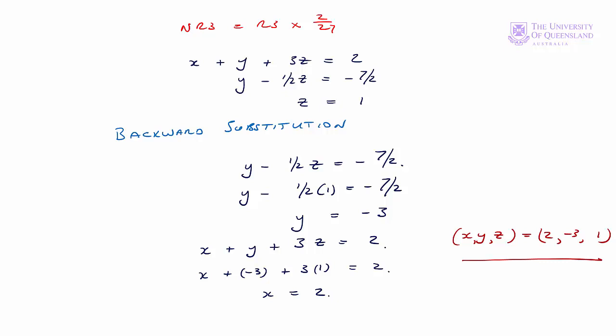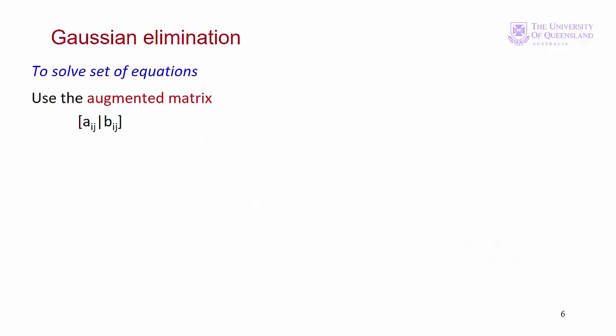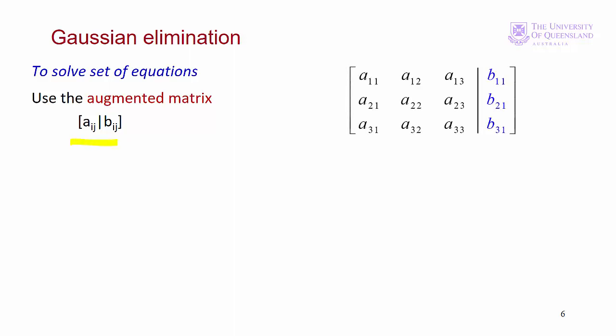As mentioned earlier, this is the only time we'll solve using the actual equations — it's more efficient to use matrix notation. The essential parts of the problem are the coefficients of the variables and the right hand side constants. We've seen how they can be represented using matrix notation. What we do now is combine them in what's called an augmented matrix. On the left we have the matrix of coefficients and on the right the vector of constants, divided by a vertical line.